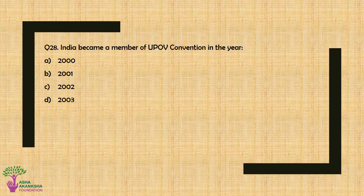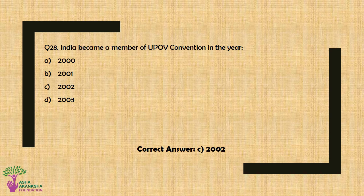Question No. 28: India became a member of the UPOV Convention in the year — Option A: 2000, Option B: 2001, Option C: 2002, or Option D: 2003. The correct answer is Option C — 2002.